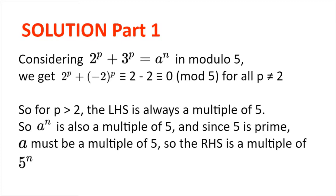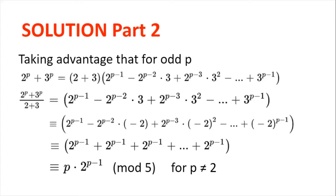This means the right-hand side must also be a multiple of 5, so a to the power of n is a multiple of 5, and since 5 is prime, a must be a multiple of 5, making the right-hand side a multiple of 5 to the power of n. Taking advantage of the fact that for odd p, 2 to the power of p plus 3 to the power of p equals 2 plus 3 multiplied by 2 to the power of p minus 1 minus 2 multiplied by 3 plus 2 to the power of p minus 3 multiplied by 3 squared, all the way to plus 3 to the power of p minus 1.